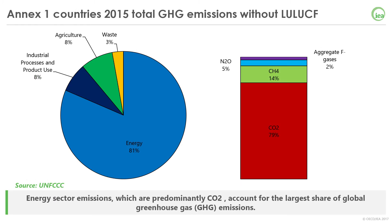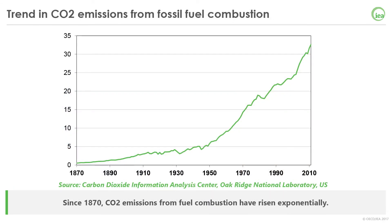Here we see the total emissions of Annex 1 countries, that means Kyoto Protocol countries, broken down by sector and by greenhouse gas. This graph excludes the land-use and land-use-change sector, meaning no sink of emissions. We can see that emissions are mostly due to the energy sectors, and most of the emissions globally are in the form of CO2. If we look at global CO2 emissions since the Industrial Revolution, we can see that the increase has been exponential. This is why from now on we will focus on CO2 emissions in the energy sector.